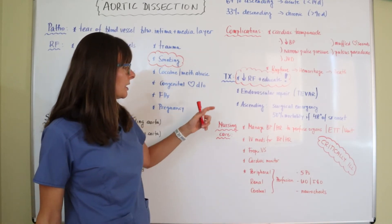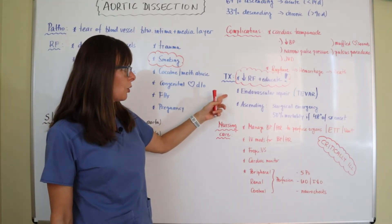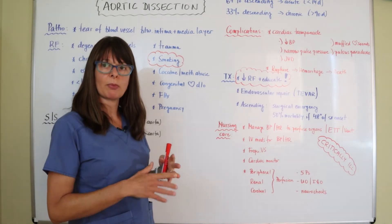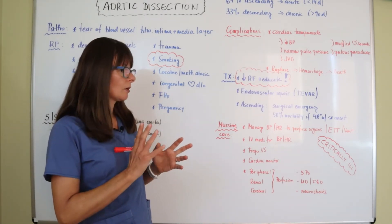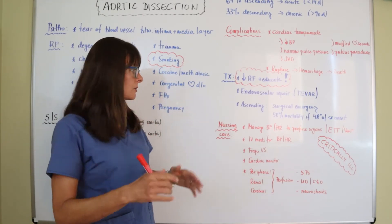And then the treatment is an endovascular repair where they go in and through the inside endovascular of the blood vessel repair this with a graft where basically the graft replaces the different layers of the blood vessel.